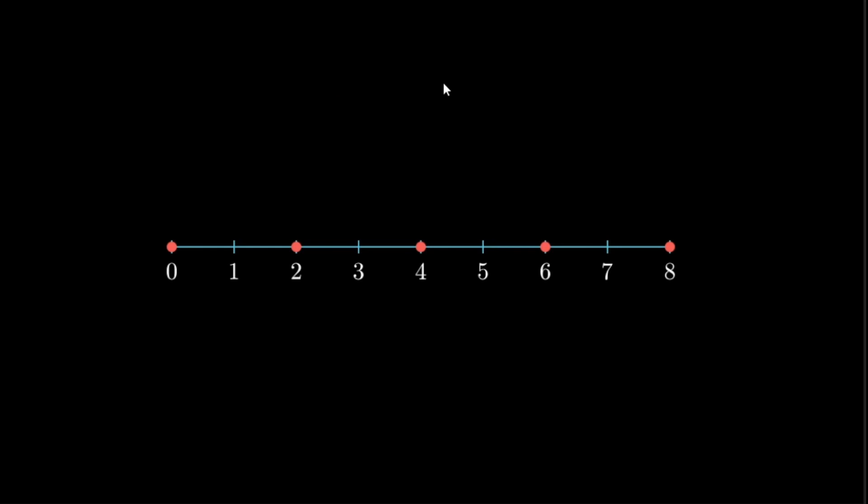However, if your data set looks something like this, where each data point is dispersed very far from the mean, this is a data set with very high variance.